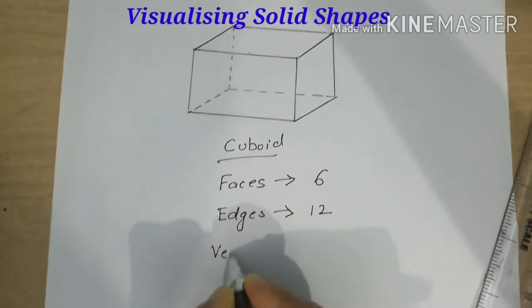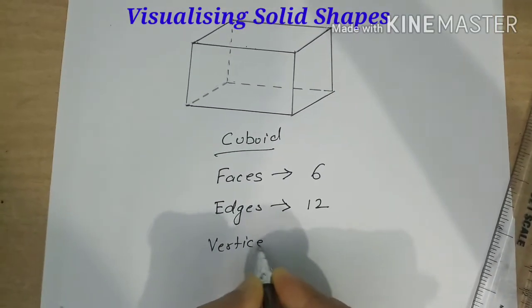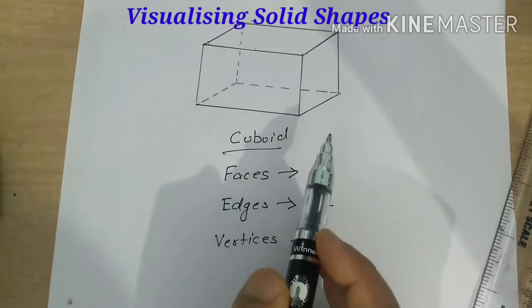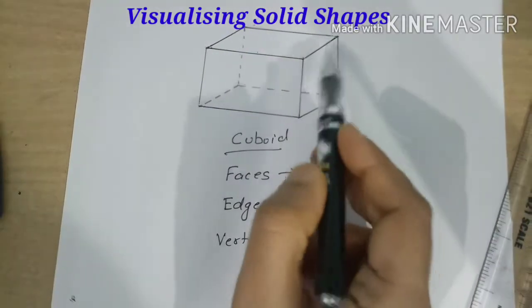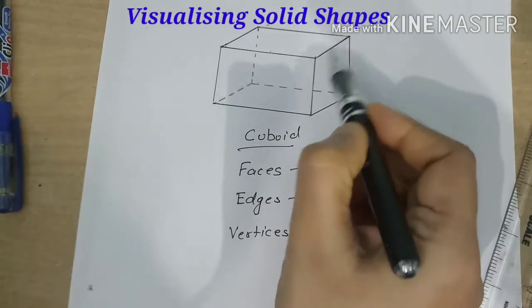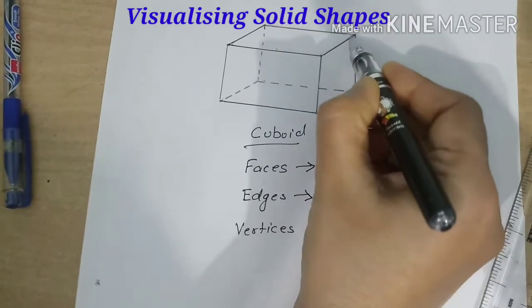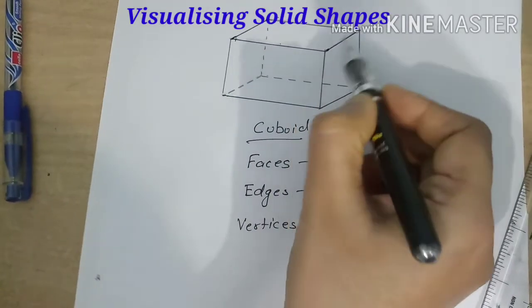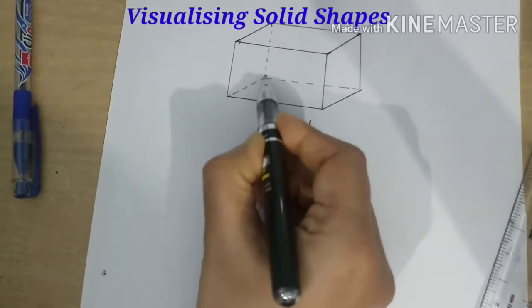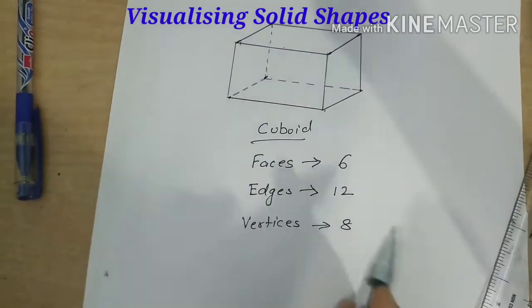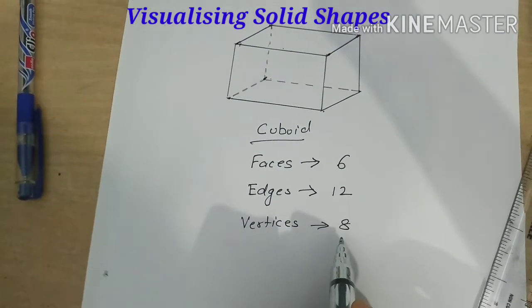Next we are going to count the vortices. Vortices are the plural of a vortex. And what is a vortex, where edges meet. And where three edges are meeting or three faces are here, these are the points. These corners are known as the vortices. So how many vortices are there? One, two, three, four, five, six, seven and eight. Like this. So total vortices, eight are there.